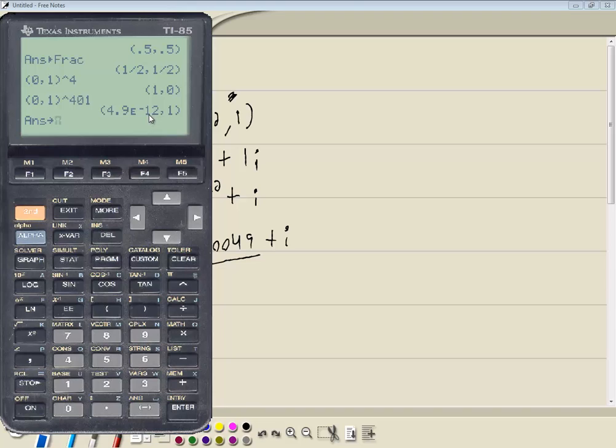Unless you're dealing with very small numbers or very large numbers, you'll never end up with that. So this would have been zero comma one if I interpret this as zero. But that's how you do complex numbers on a TI-85 calculator.